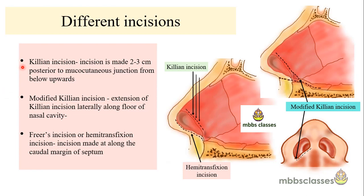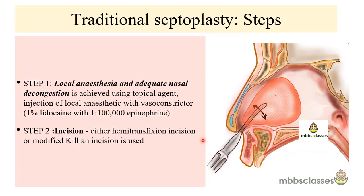These incisions differ from one another based on the site. The Killian's incision is made two to three centimeters posterior to the mucocutaneous junction, laid from below upwards. The modified Killian's incision extends the same incision along the floor of the nasal cavity. The Freer's incision, or hemitransfixion incision, is mostly used when the patient has an anterior DNS — the incision is made at the caudal margin of the nasal septum.